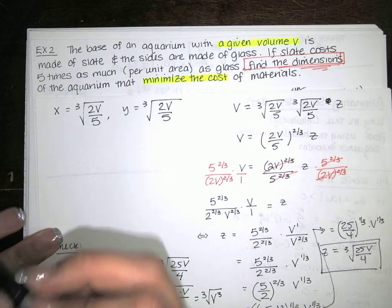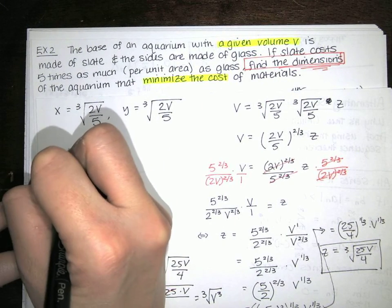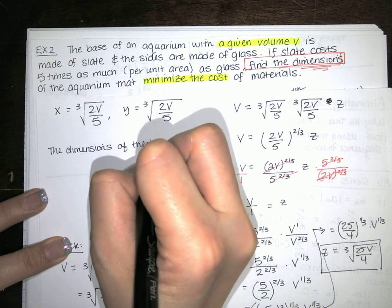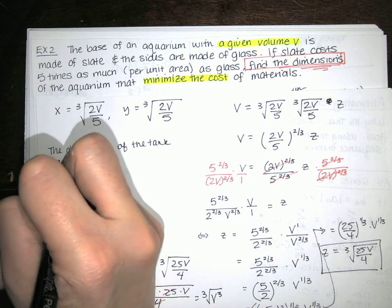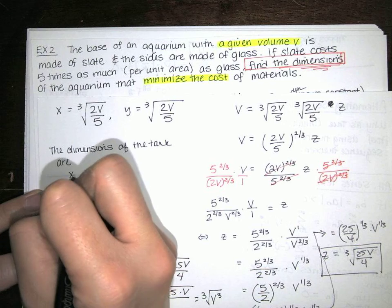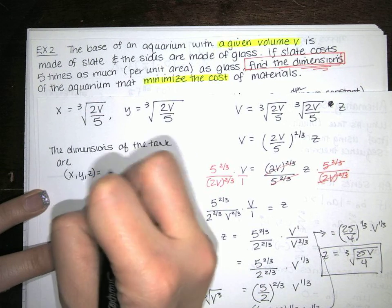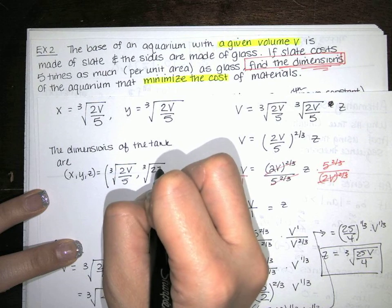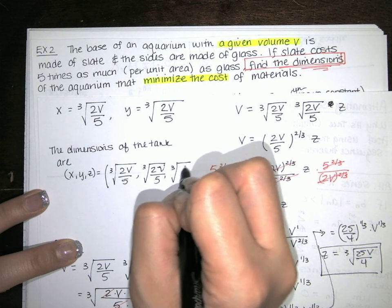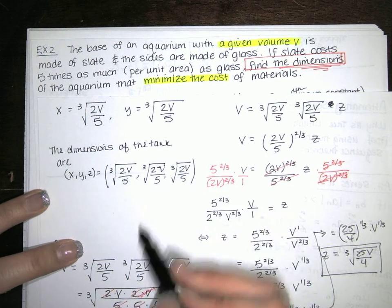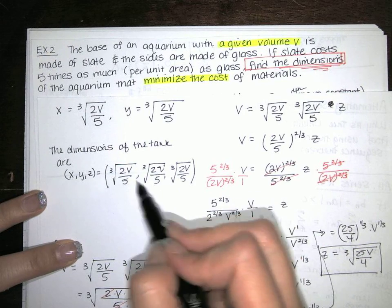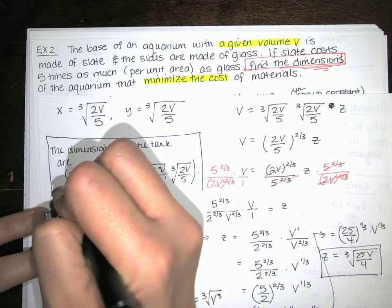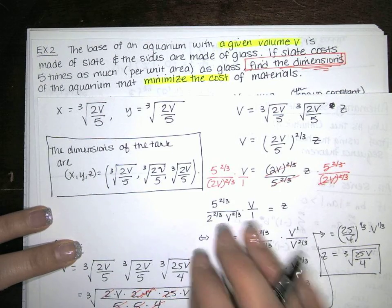So here is the answer. The dimensions of the tank that minimize cost are: x equals the cube root of 2v over 5, y equals the cube root of 2v over 5, and z equals the cube root of 25v over 4. We've answered the question.